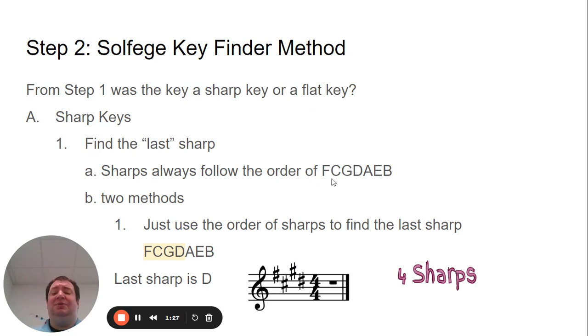So you can memorize the order of sharps as F, C, G, D, A, E, B. Now, the first method is to look at the order of sharps, count how many sharps there are and find the last sharp. So one, two, three, four—the last sharp will be D. Okay, so that's method number one.